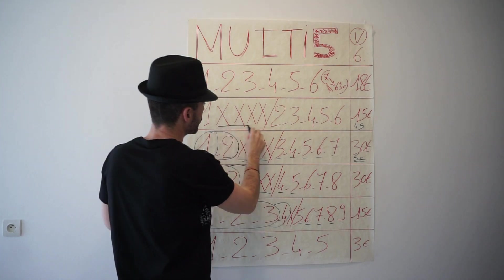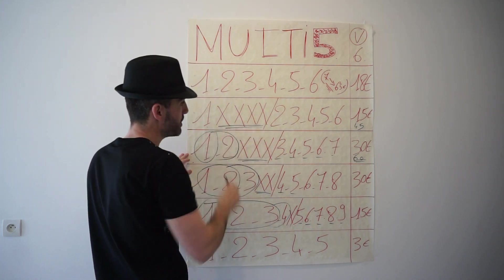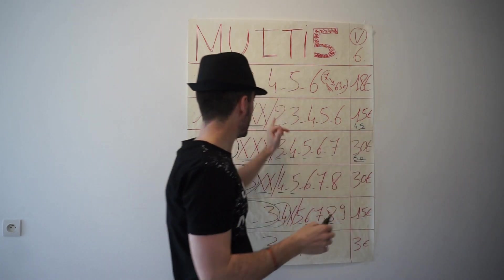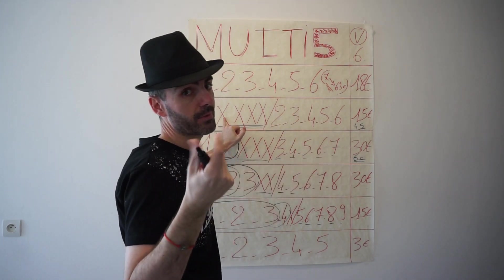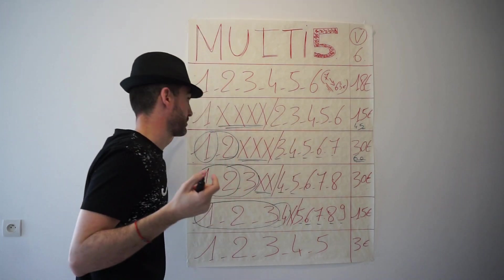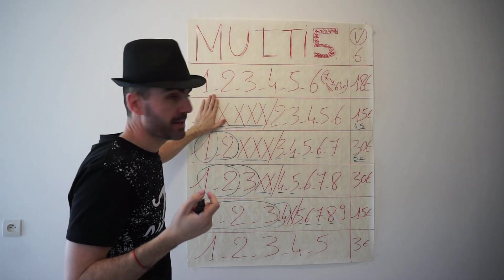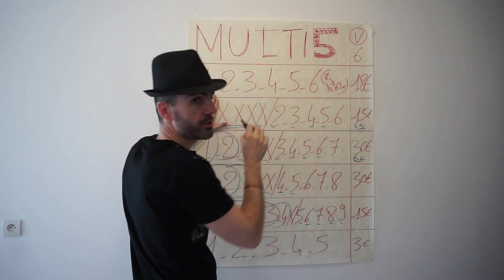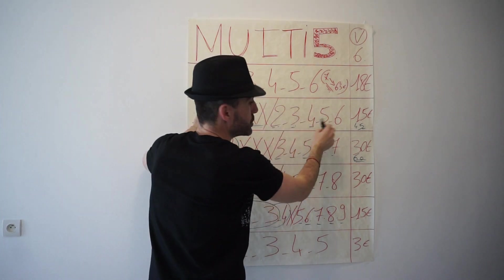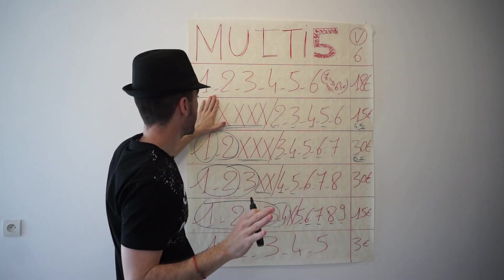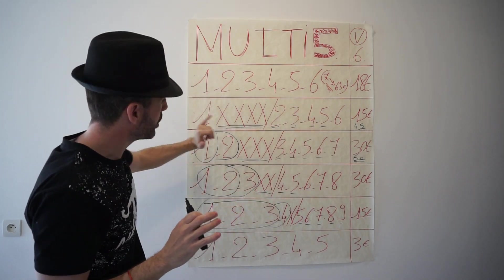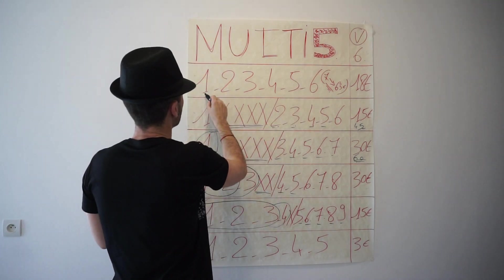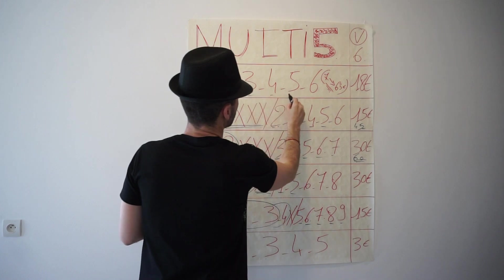On finit avec le fameux jeu Quadru plus X : 1 de base, 5 derrière, 15 euros. On en rajoute un, c'est 45. Plus on met de X, plus on rajoute un cheval, plus ça coûte cher. L'avantage de ce jeu c'est que si la base est au bagne, on touche au moins une fois le multi en 5. Mais il faut bien évidemment que nos chevaux soient à l'arrivée. Si vous avez la base qui est bonne et vos 3 chevaux derrière, vous le décuplez.